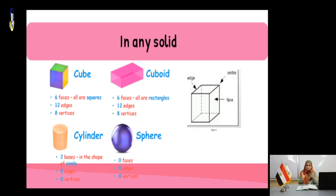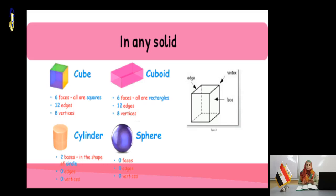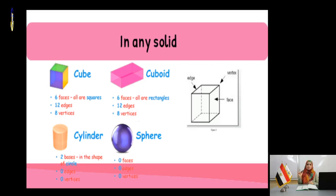The sphere — the ball that you can see in your room — it has no face, no vertex, and no edge. So you have edge, vertex, and face for each solid.